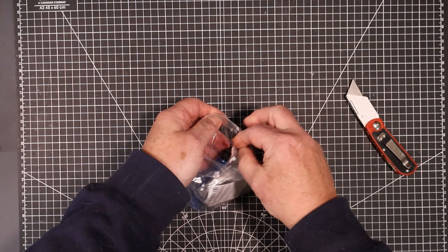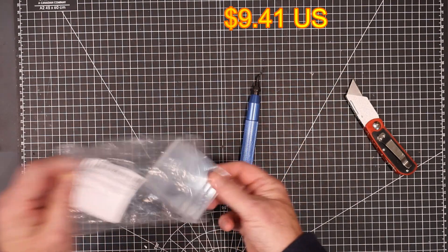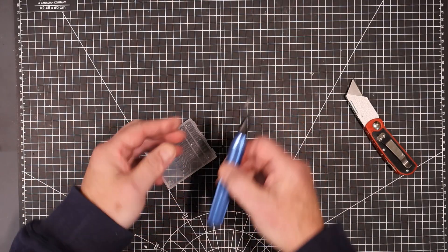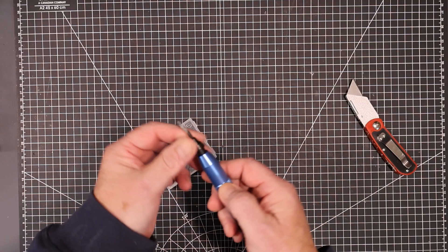This is a burr remover, a deburring tool. I have one of these. I have two different types. I have one like this, which you just kind of run in and around inside the hole. But the one that I have is plastic.